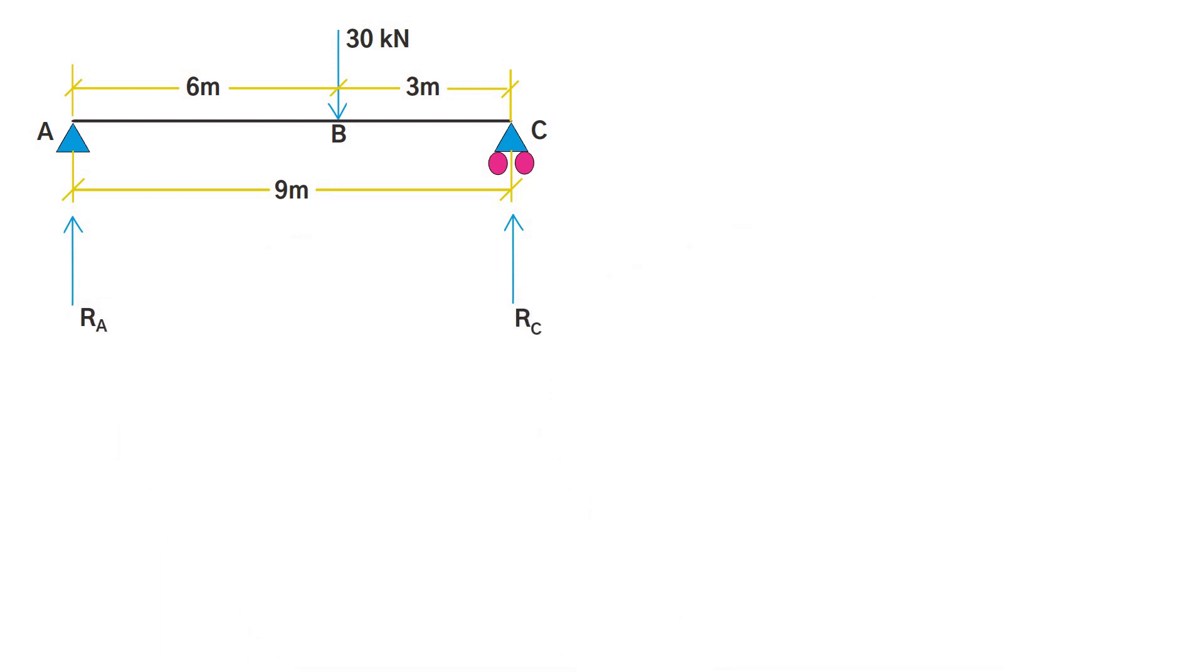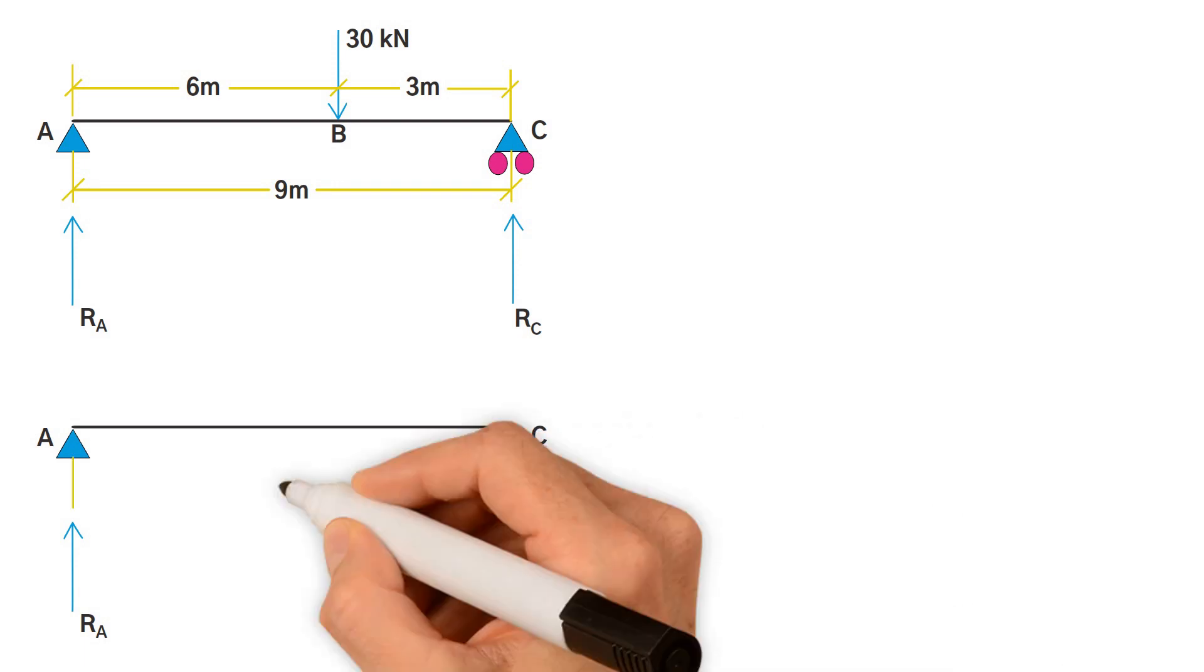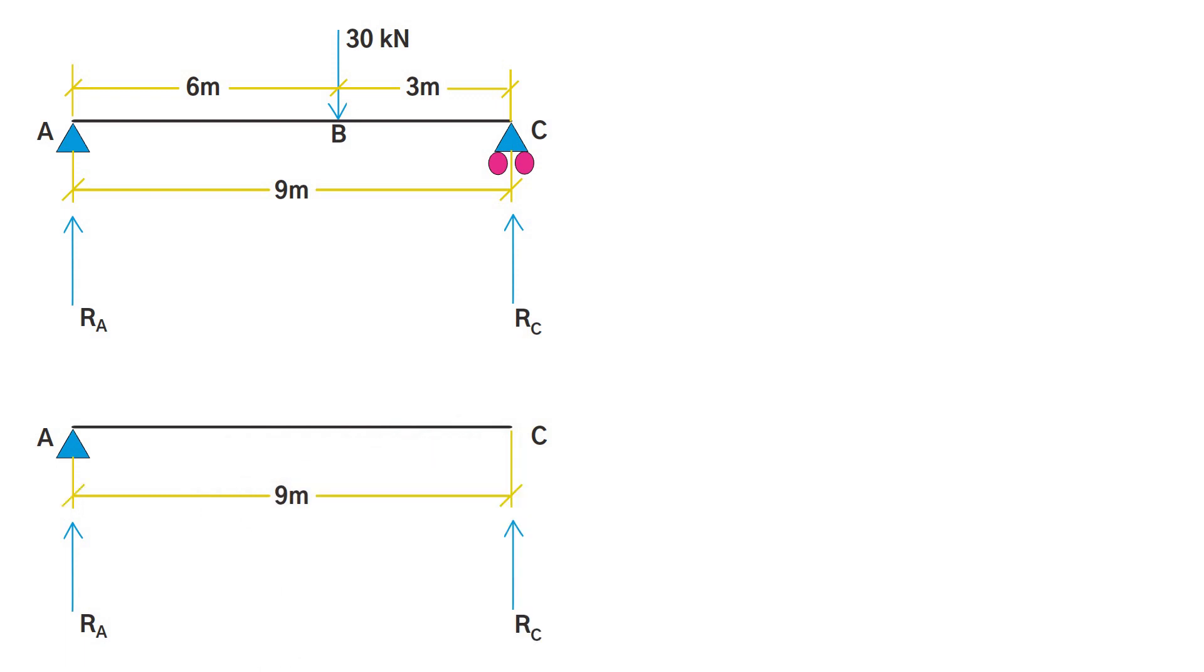Firstly, what we're going to do is take a moment about A. You can see that the lever arm is 0 for reaction R_A. Hence R_A has 0 moment about A. The anti-clockwise moment is due to R_C reaction, and the lever arm is 9 meters from C to A. So we can write moment about A is R_C times 9.